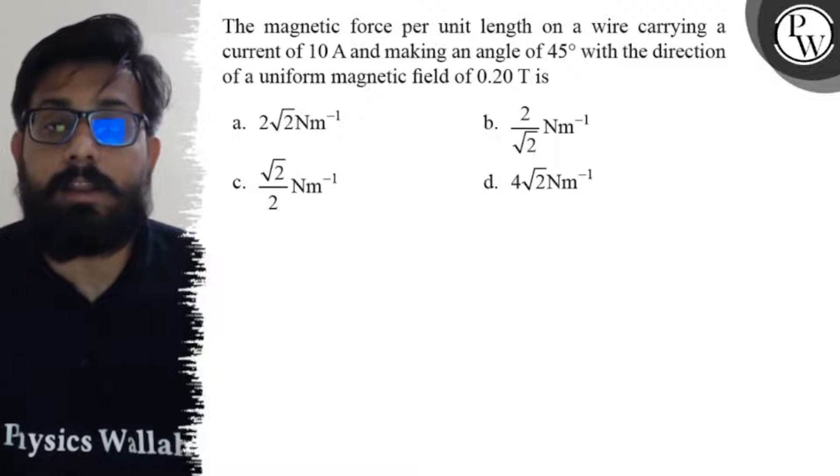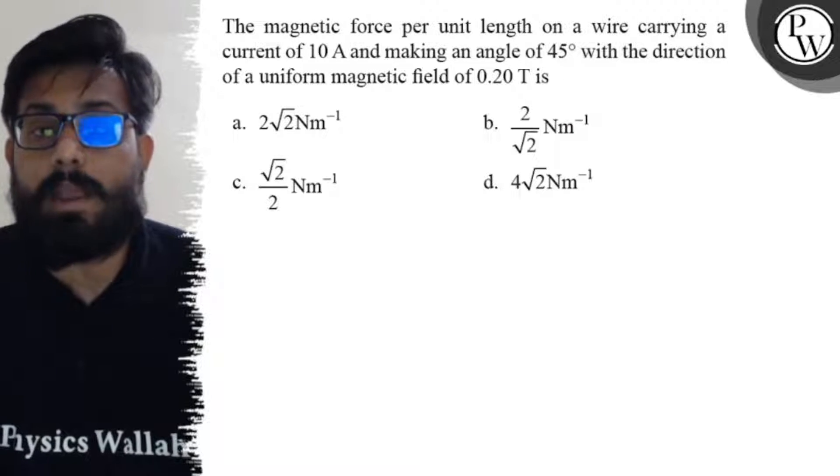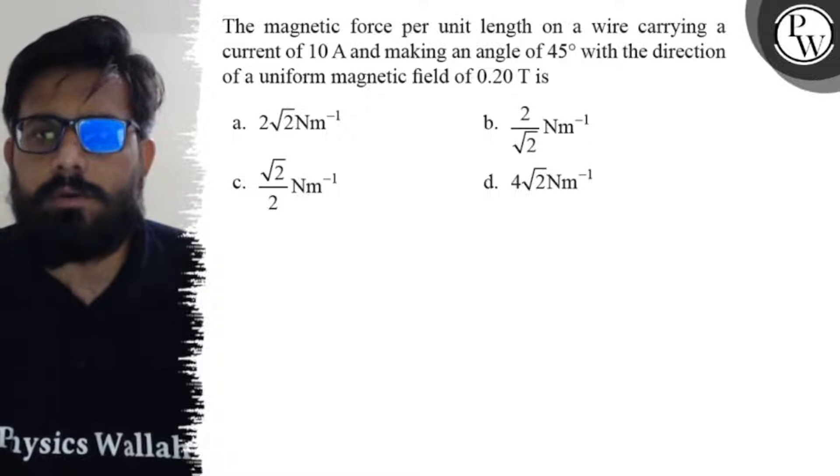The magnetic force per unit length on a wire carrying a current of 10 ampere and making an angle of 45 degree with the direction of a uniform magnetic field of 0.20 tesla is,